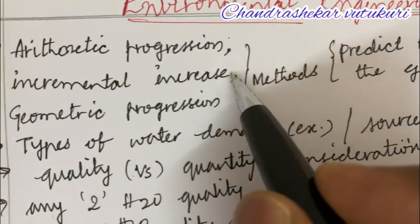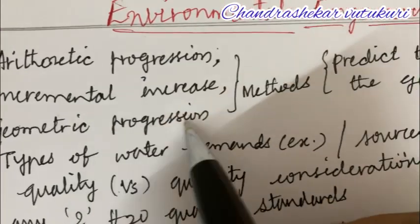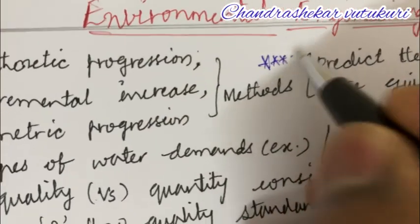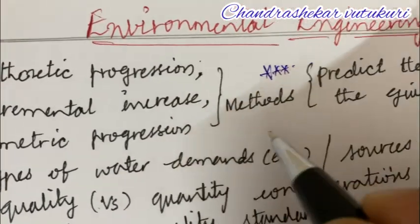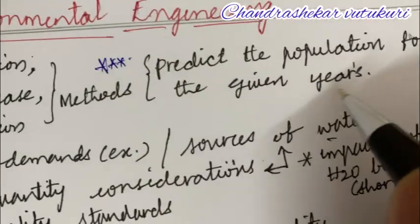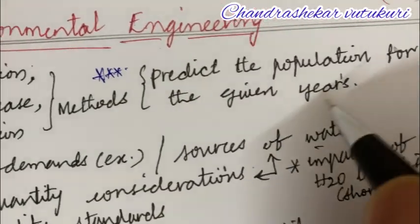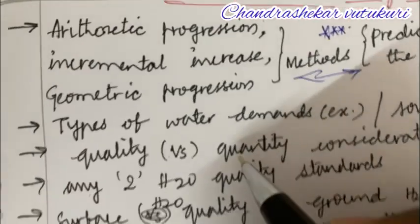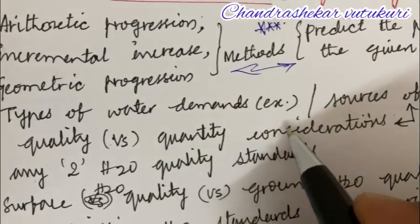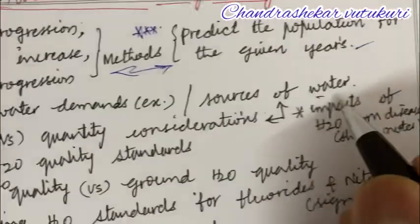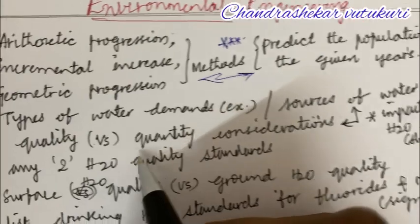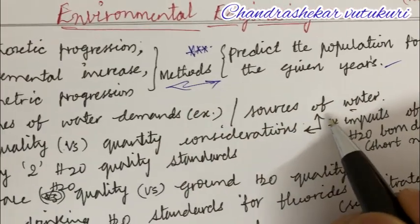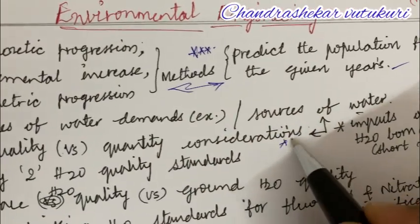The arithmetic progression, incremental increase, and the geometric progression method is said to be the topmost question, which may occur in question 2A to B or the third question — predict the population for the given years. Types of water demands along with an example, sources of water, and the quality versus quantity considerations related to the sources of water is said to be the topmost question.